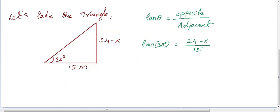We know that tan 30 value is 1 by root 3. So, 1 by root 3 is equal to 24 minus x divided by 15. So, now move this 15 to left hand side. We will get 24 minus x equals to 15 by root 3.